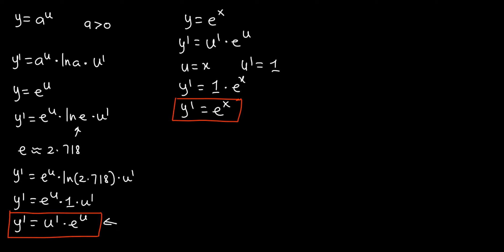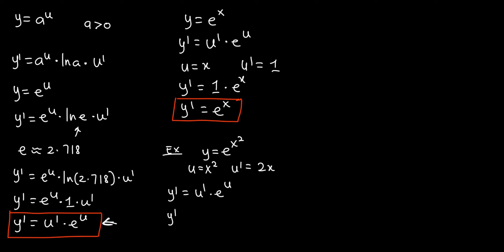Let's try another example. Here, y equals e to the power x squared. In this case, u is a function — u equals x squared, which is a function of x. So we need u', which equals 2x. Going back to the general formula, y' equals u' times e to the power u. Substituting, y' equals 2x times e to the power x squared. This is the derivative of the given function.